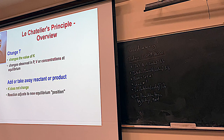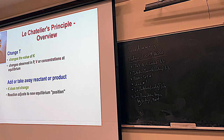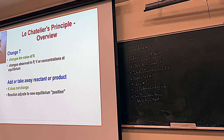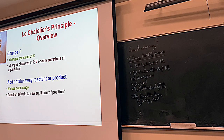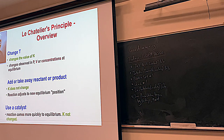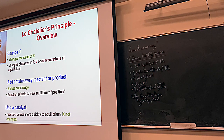If you add or remove reactant or product, Le Chatelier's principle works and K doesn't change. If you add something, the reaction shifts to the opposite side — adding reactant shifted to the product side in our last example. You can add product and have it shift to the reactant side. If you take something away, it moves toward the side you took it from — like the Haber process: taking away ammonia makes more ammonia. Catalysts don't change the reaction or K; they just make equilibrium come faster.